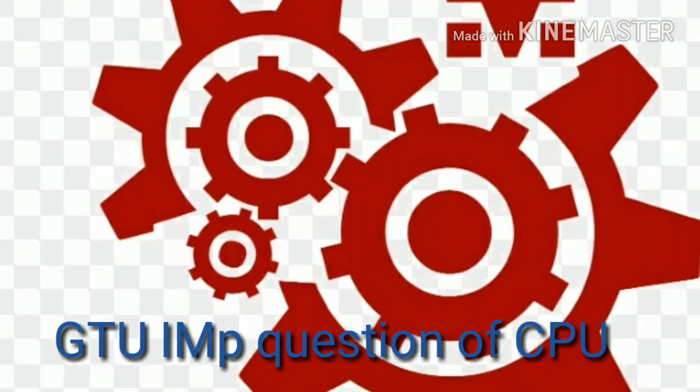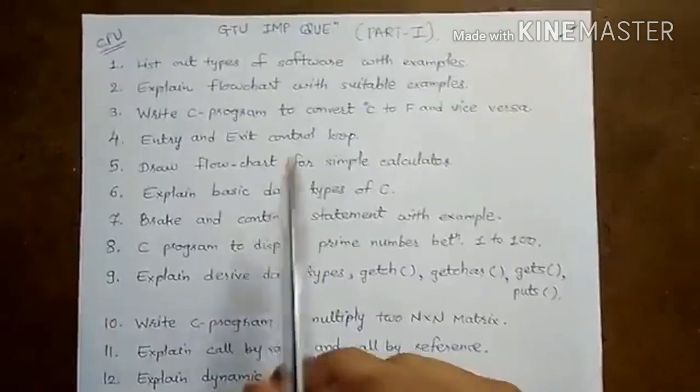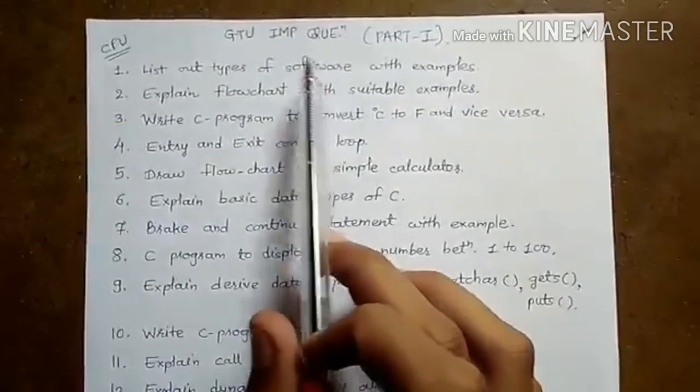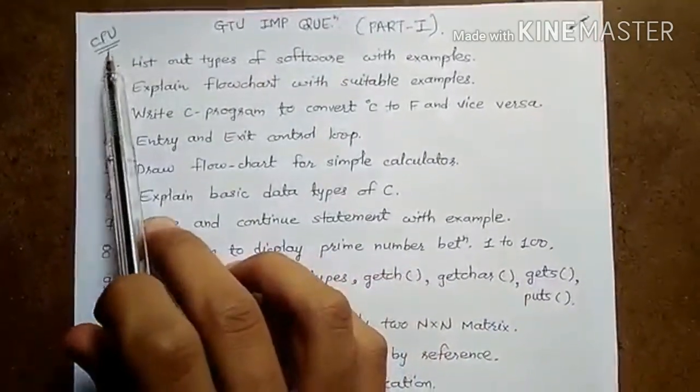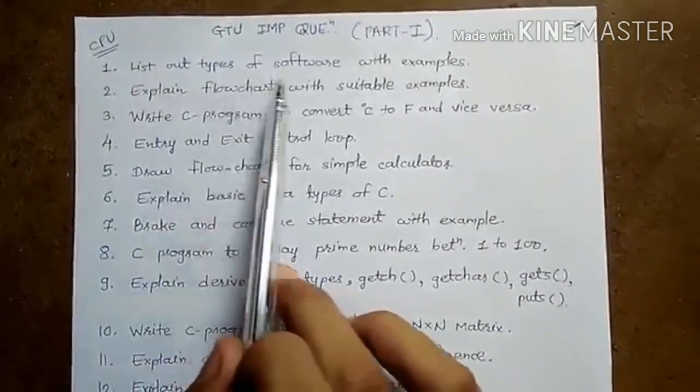All right, hello friends. GTI and this question for the subject of computer programming and utilization. First, list out types of software with examples.